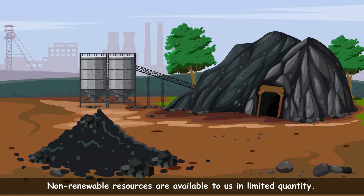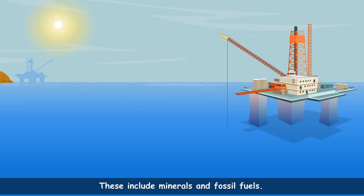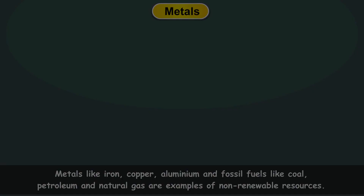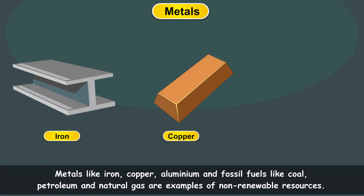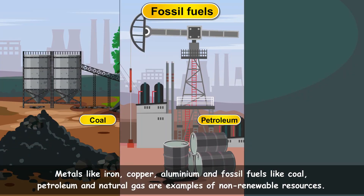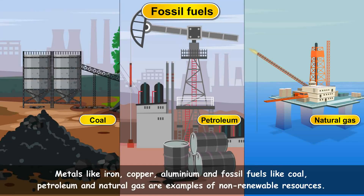Non-renewable resources are available to us in a limited quantity. Once they are exhausted, they cannot be created or made. These include minerals and fossil fuels which are getting exhausted due to excessive continuous usage. Metals like iron, copper, aluminium and fossil fuels like coal, petroleum and natural gas are examples of non-renewable resources.